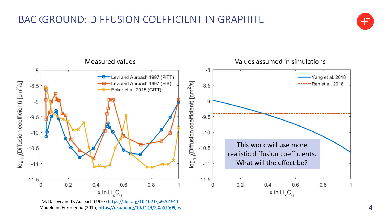On the left are the measured values of the log diffusion coefficient of lithium ions in graphite versus the stoichiometry, from two different papers and three different experiments. Qualitatively, they all agree that the diffusion coefficient is almost negligible except near where the phase transitions occur between the different phases of lithiated graphite. Whereas on the right are what was assumed in the simulations, where it's much smoother and in one case there's no variation at all. In this work, we're going to use the more realistic diffusion coefficient — specifically the yellow curve on the left — and put it back into the model.